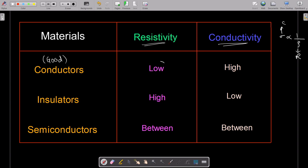For good conductors, the resistivity is low. Since resistivity is low and conductivity equals one by resistivity, the conductivity is very high. So for conductors, the conductivity is high.